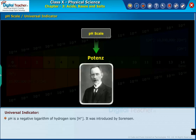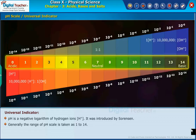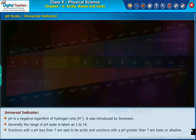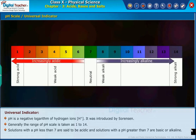pH is the negative logarithm of hydrogen ions. It was introduced by Sorensen. Generally, the range of the pH scale is taken as 1 to 14. Solutions with a pH less than 7 are said to be acidic, and solutions with a pH greater than 7 are basic or alkaline.